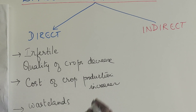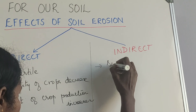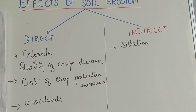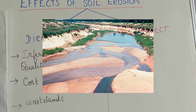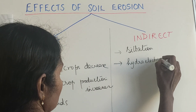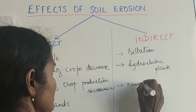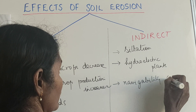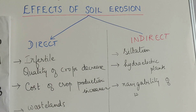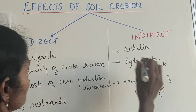Now we move on to the indirect effects. The first and foremost is silting, also called siltation. All this fine soil goes and gets deposited elsewhere, and because of this silting, hydroelectric generation of plants is affected. It also affects the navigability of waterways — in many places things are transported through rivers, and if silted, the water becomes shallow and not navigable. These are the indirect effects of soil erosion.